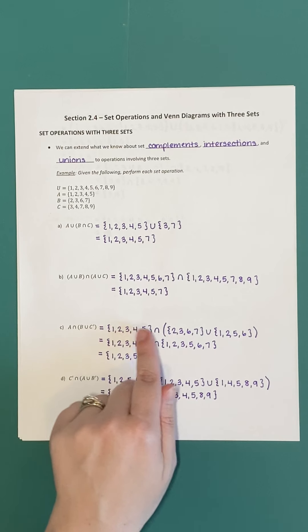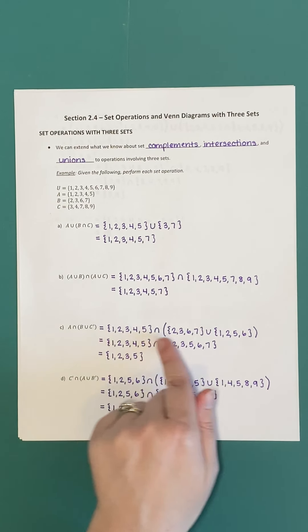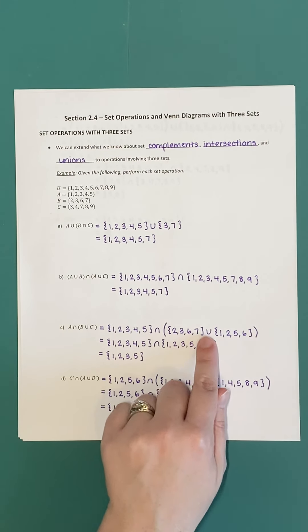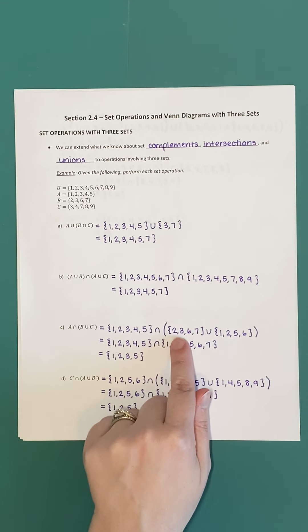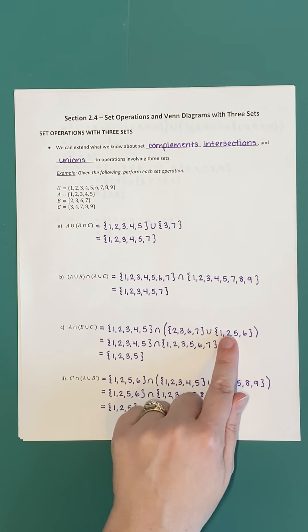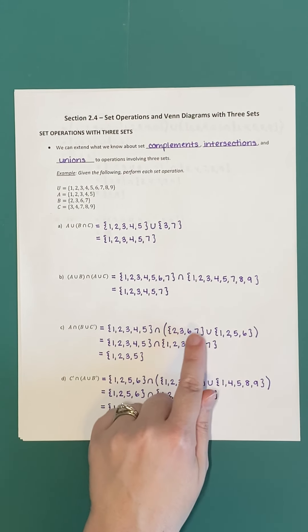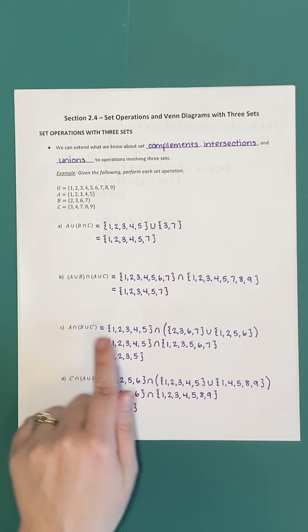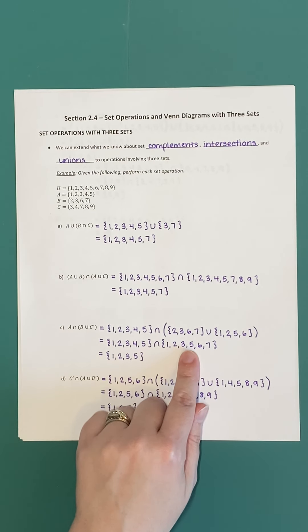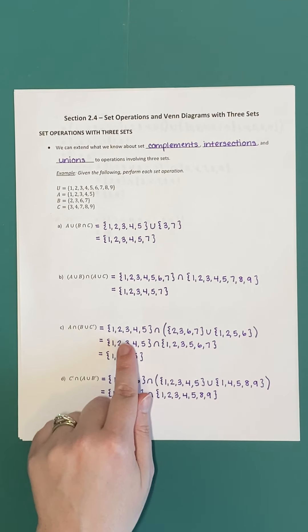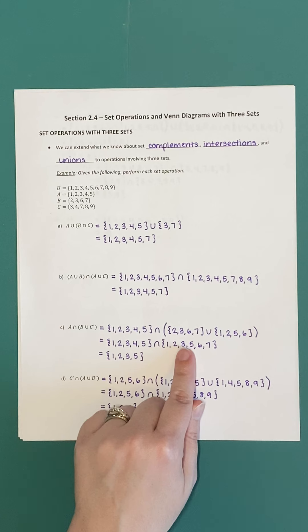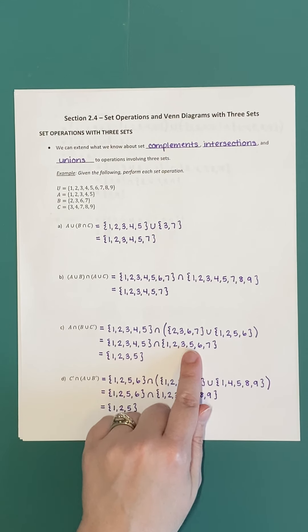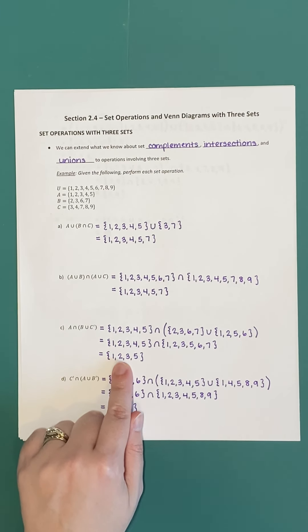Now we take the union of B = {2, 3, 6, 7} with C' = {1, 2, 5, 6}, giving us {1, 2, 3, 5, 6, 7}. Finally, we take the intersection of A = {1, 2, 3, 4, 5} with that result. One, two, and three are common; four is not; five is common. So our intersection is {1, 2, 3, 5}.